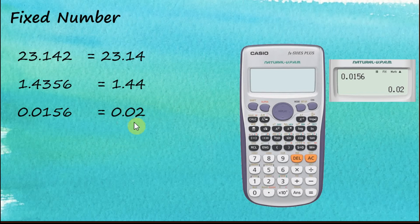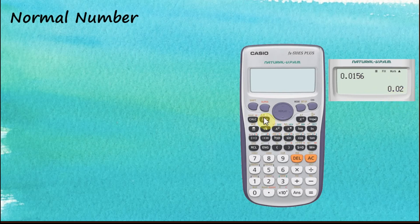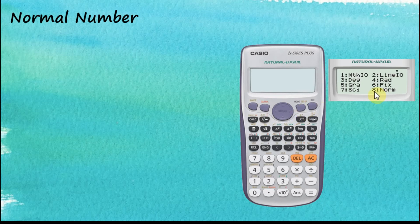That is the use of the fixed number function. Now for the normal number mode — if we've already set the calculator to display answers in scientific notation or fixed mode and want to change it back to normal numbers, we go to Setup, Shift, Setup, and choose Normal, option eight. For example, 0.0156 was displayed as 0.02 in two decimal places; now let's change it back to normal.